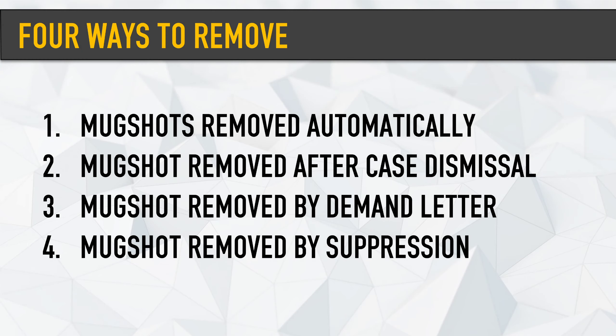So the four different ways that a mugshot can go away — some are very easy, some require a little bit of work. Mugshots can be removed automatically, they can be removed after a case dismissal, they can be removed after you send over a demand letter, or they can be removed by a suppression campaign. Today we're going to talk about all four of those.